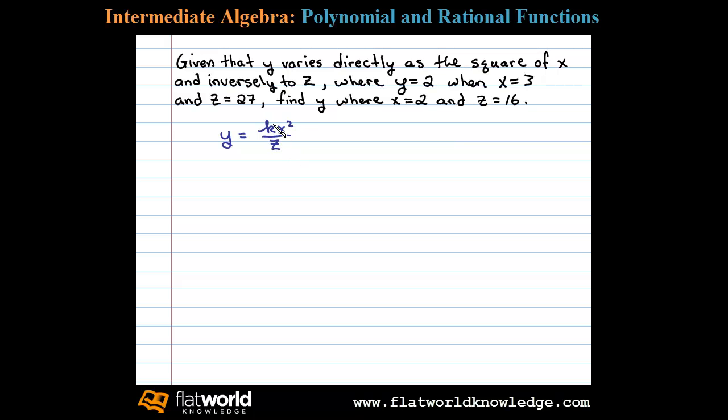Now the first step is to find the constant of variation k. To do that we'll use the given information. Here it says y is equal to 2 when x is 3 and z is 27. So you can see when we substitute in those values, the only variable left is k and so we can solve for k.